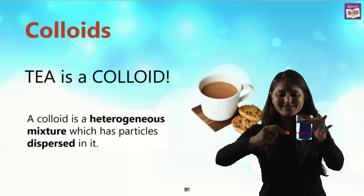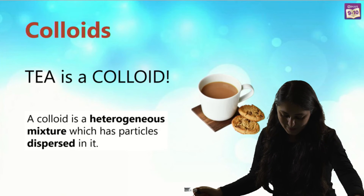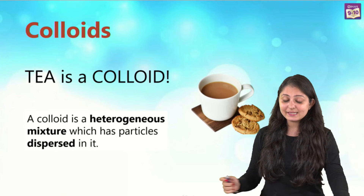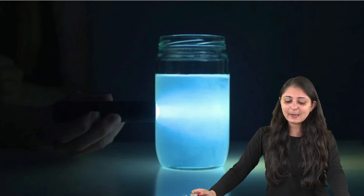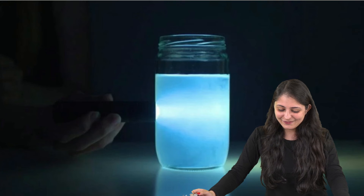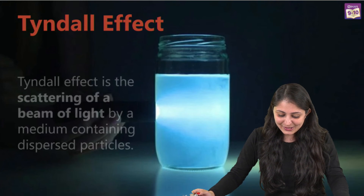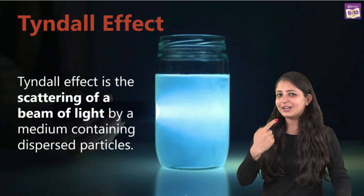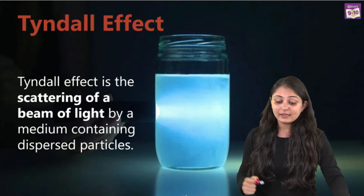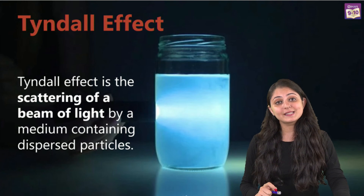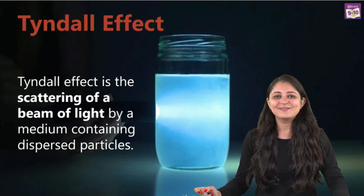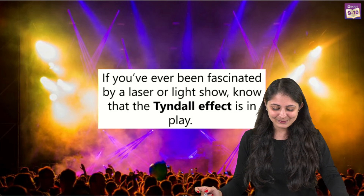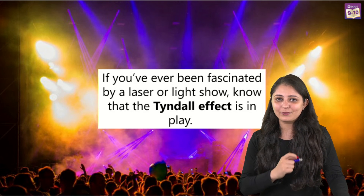This light-scattering effect has a name — it's called the Tyndall Effect, and it was discovered by John Tyndall. Even though the particles of tea are small enough not to be visible to the naked eye, they are large enough to scatter light and make the path of light visible.